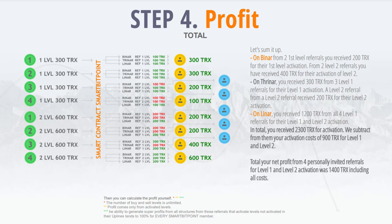Referral number 2 paid 600 TRX for level 2 activation. In binary, you get nothing — your first-level upline gets 200 TRX. In trinary, you get nothing — your first-level upline gets 200 TRX. In Lina, you get 200 TRX. In total, you get 200 TRX. Total income: 1300 TRX.